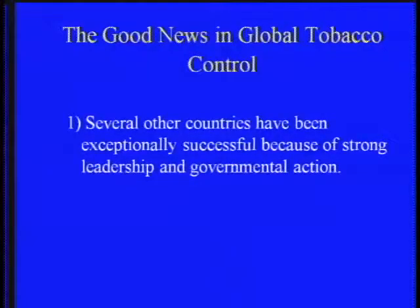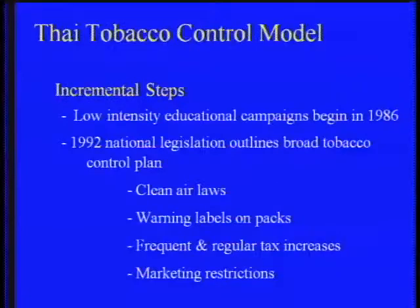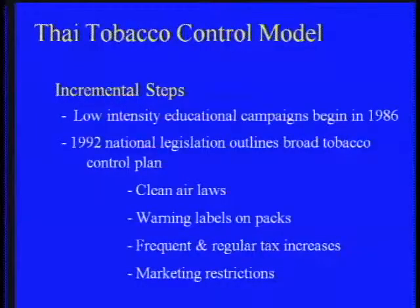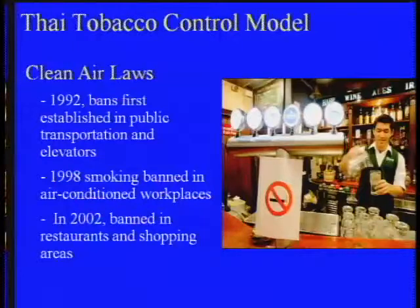Other good news is that several countries have been exceptionally successful due to strong national leadership and governmental action. I want to contrast tobacco control in Thailand with China. In the mid-1980s, Thailand began low-intensity educational campaigns. By 1992, they had national legislation outlining a broad tobacco control plan including clean air laws, warning labels on packages, frequent and regular tax increases, and marketing restrictions. What's important is that there has been incremental progression as social norms change, tightening up the intensity of each measure.